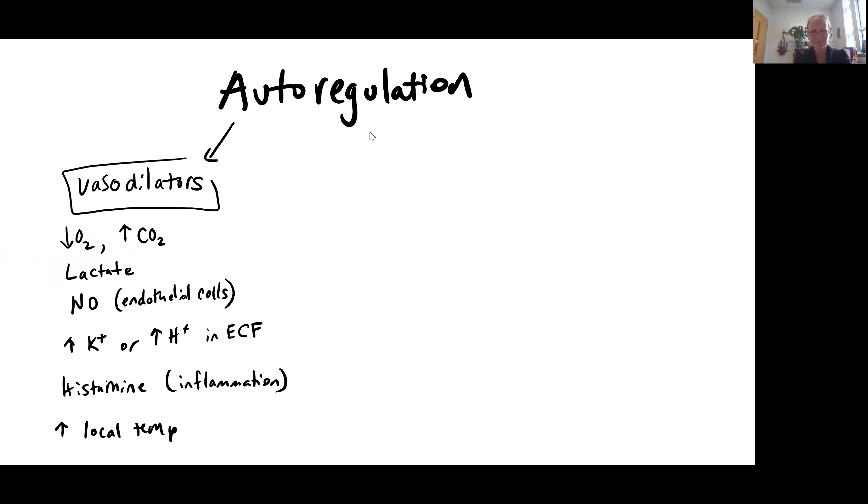Autoregulation. If we want more blood flow to an area, we're going to dilate the blood vessels. So, we're going to use what are called vasodilators to dilate, open up the blood vessel and get more blood to an area. So, this is a list of vasodilators, things that will increase your blood flow.